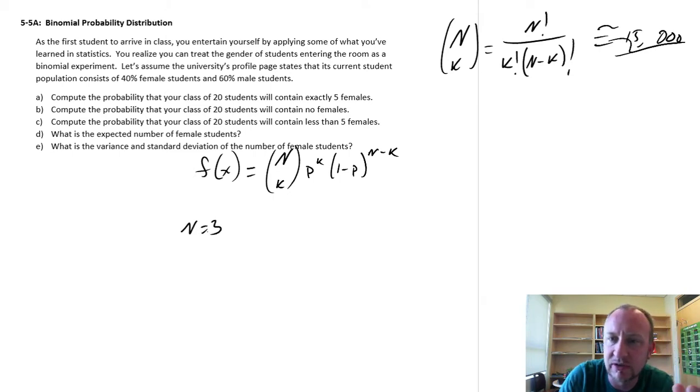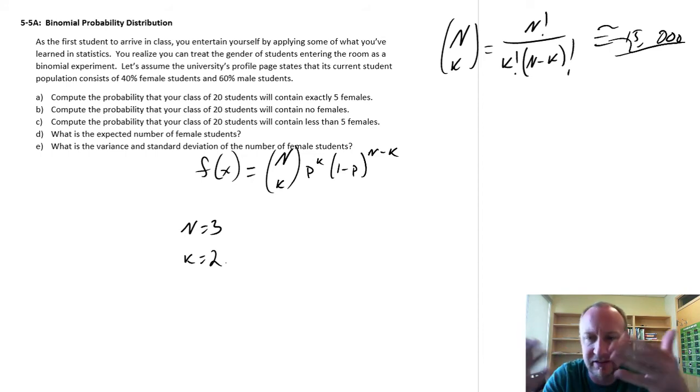And we're going to use what's the probability that of those three, two of them are female. So we call that a success because that's what we're counting, two females.